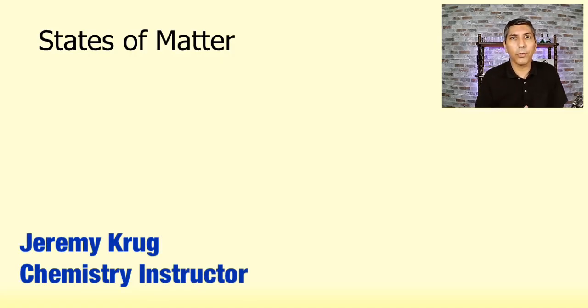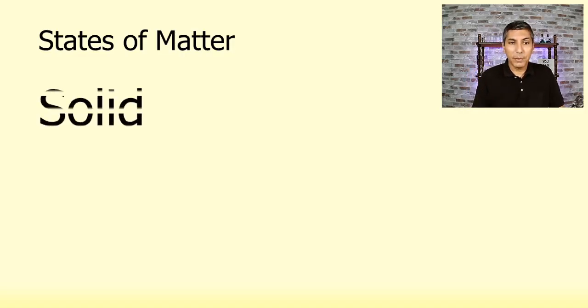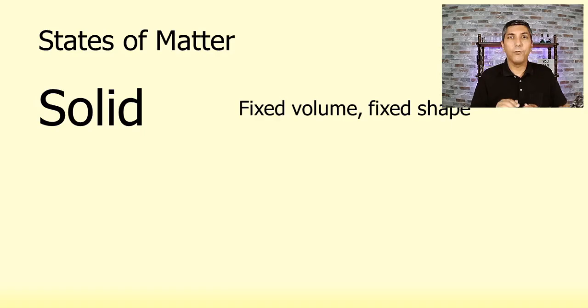Now, you've probably heard about the three main states of matter for a long time: solid, liquid, and gas. You're probably familiar with solids. You know that solids have a fixed volume and a fixed shape. That means that if you have a solid object, it's not going to start shape-shifting into something else, and likewise it has a fixed volume.